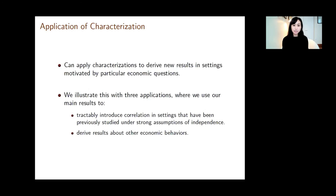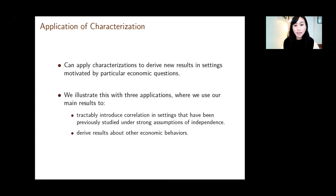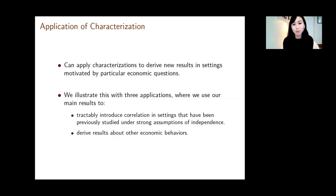Why do we find exact optimality interesting? One benefit is you can do comparative statics or plug that solution into other problems. In our paper, we look at three applications where we use this characterization to first practically introduce correlation in settings previously studied under strong assumptions of independence, and also to derive results about economic behaviors not necessarily directly related to information acquisition.